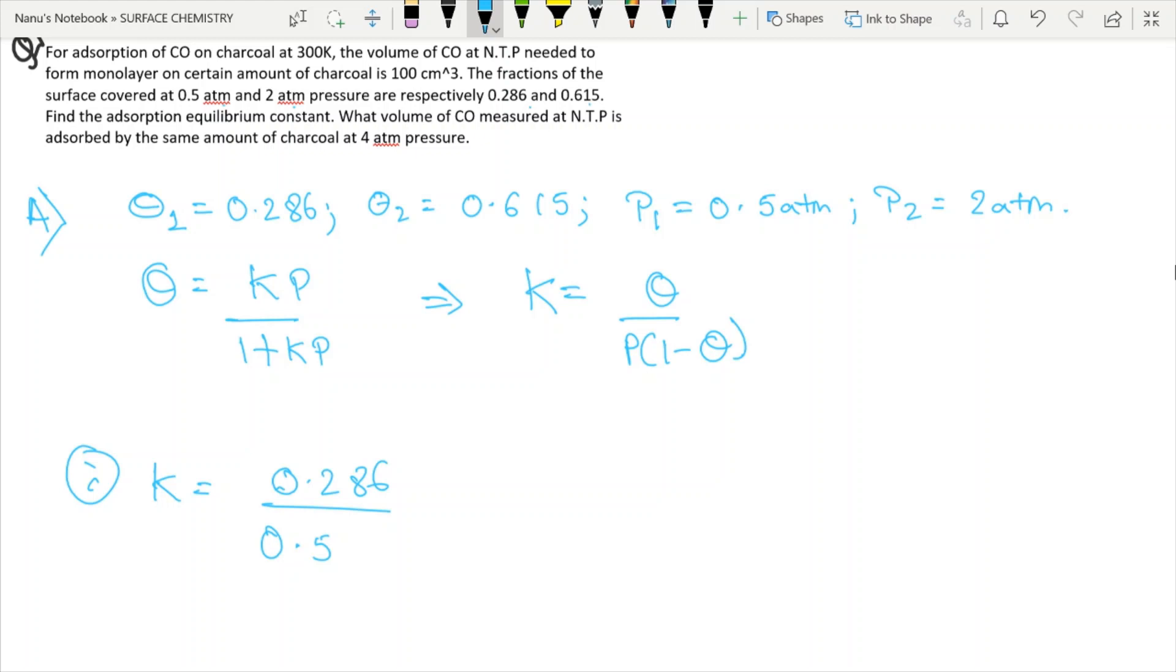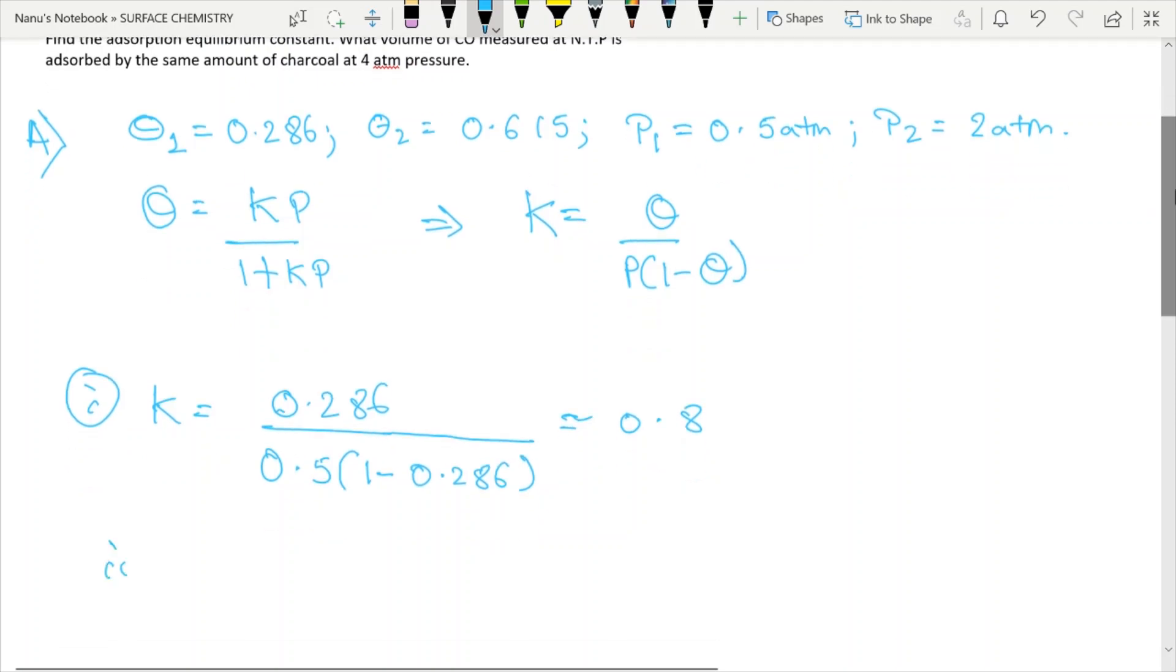We have two cases. Sometimes this is a trick given by the examiners that they purposely give more information to confuse students. Sometimes it's not needed. If we solve this, we get a value of around 0.8. And in the second case also, if you do K equals 0.615 over 2 times 1 over 1 minus 0.615, the value you get is also around 0.8. So it proves that K remains constant for the particular process. But the question does not end here.